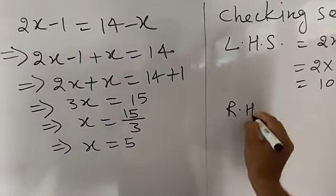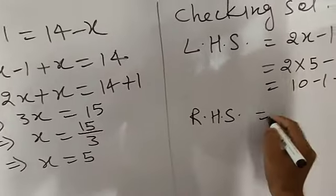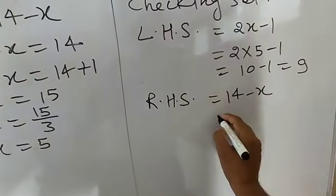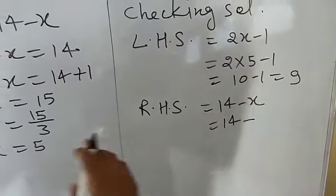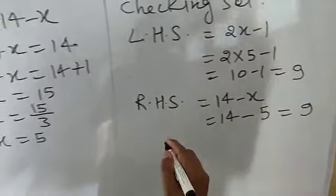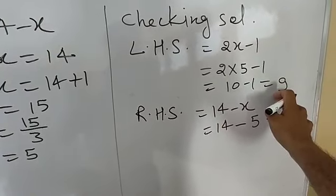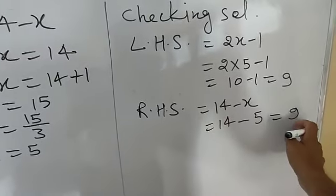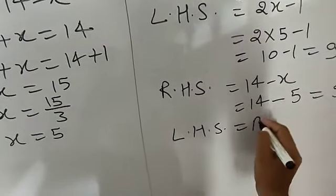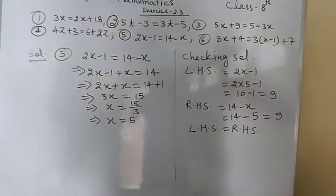Now I am going to find the right hand side. RHS is 14 minus x. Putting x equal to 5: 14 minus 5 equals 9. We get LHS equal to 9 and RHS equal to 9. So LHS equals RHS, which means your solution is correct.